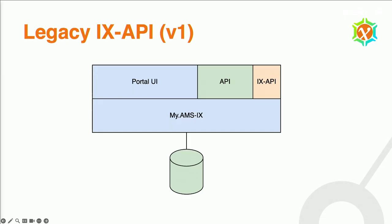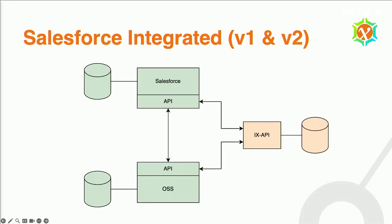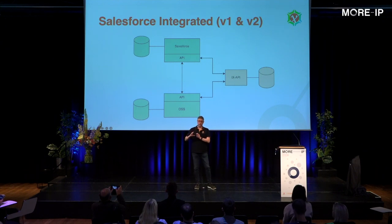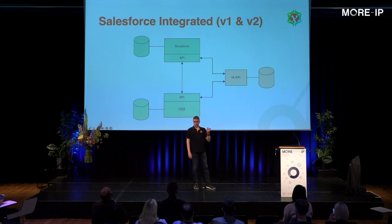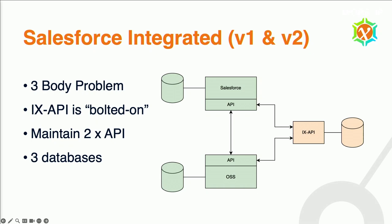This is the legacy IX API — it's built on MyM6, and on top of the MyM6 core there's a portal, a bit of API, and IX API. It's kind of monolithic, so we need to move away from that. With the Salesforce-integrated API, the IX API is still a standalone application with its own database, and it talks to Salesforce and our OSS stack. Meanwhile, Salesforce and the OSS stack also talk to each other, which gives you a sort of three-body problem — you have to synchronize state and make sure it all stays consistent. In essence, you have to maintain three databases and keep them consistent, so the application currently feels kind of bolted on.